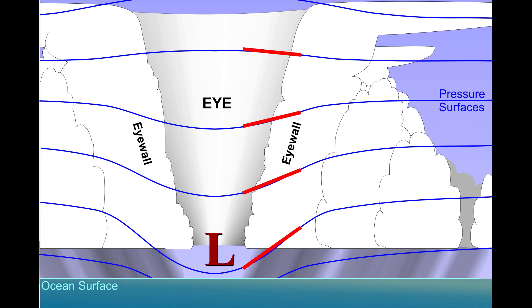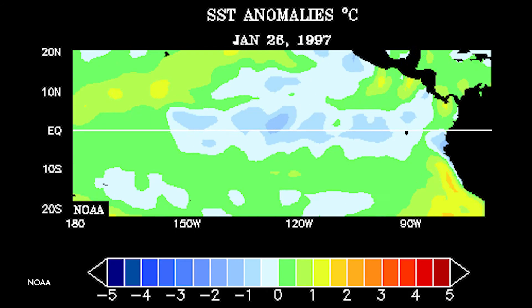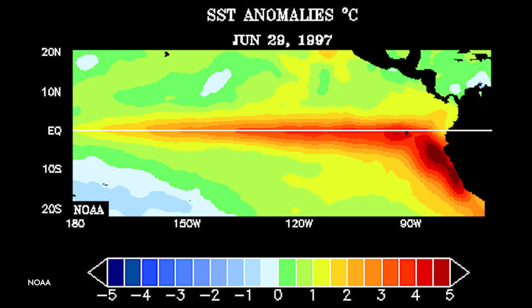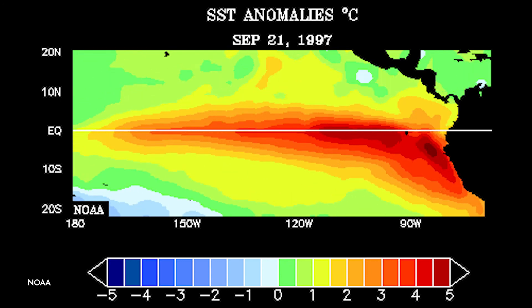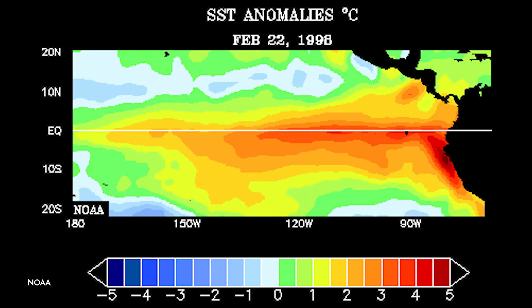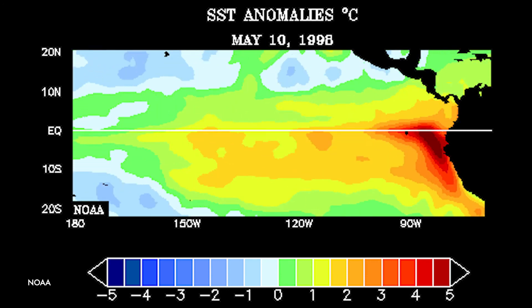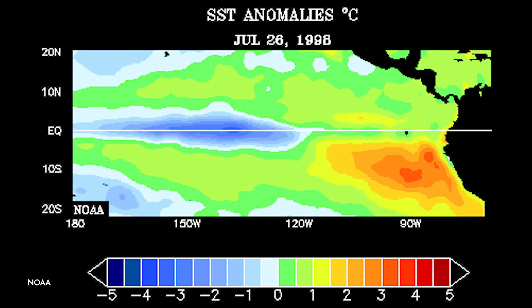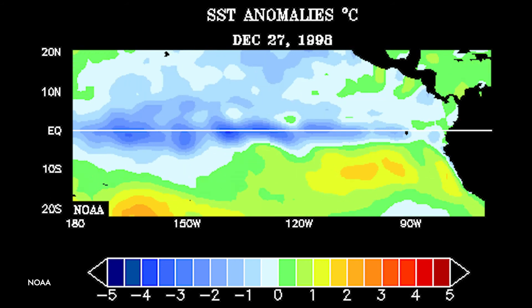Besides tropical cyclones, we also talk about other tropical phenomena like monsoons, tropical waves, and El Niño. After this course, students will have a very comprehensive understanding of different tropical weather and climate systems and also the understanding of basic dynamics in the tropical region.